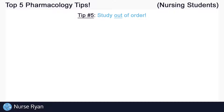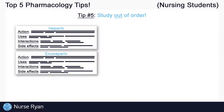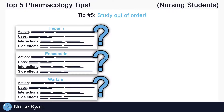And finally, tip number five, which is to study out of order. Sometimes when we study our drugs, we study them in the exact same order day after day. Maybe you study heparin, then enoxaparin, then warfarin and so on. After a while it might seem like you're getting really good at knowing these drugs, but are you just getting familiar with the pattern? On your exams, you're most likely not going to see them in perfect order — everything will be jumbled up from what you're used to. Try picking drugs out of your list at random to actually trip yourself up while studying.